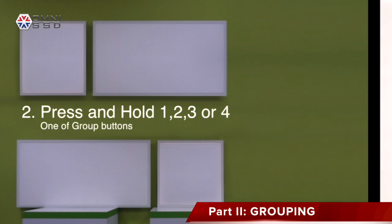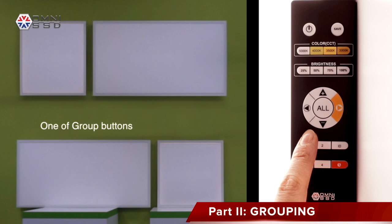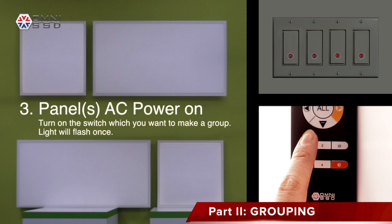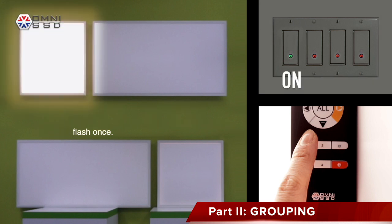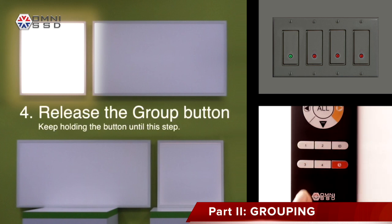Press and hold one of the four group buttons — one, two, three, or four — while holding the button. Turn the panel AC power back on; right after turning on, the lights will flash once. With the lights flashing once, you can release the group button on the remote and that grouping has been completed.